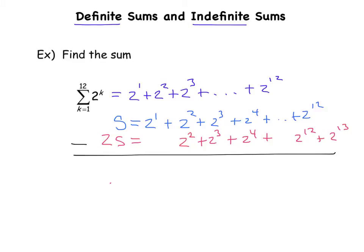We know that we're supposed to subtract. S minus 2S is negative 1S. 2 to the 1 minus 0 is 2 to the 1, and then everything else subtracts to 0. 0 minus 2 to the 13 gives me this, and then if I divide by negative 1, I know that S is equal to this.